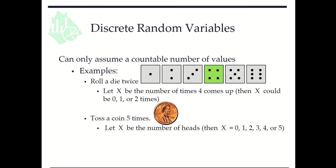For example, when we roll a die twice and let x be the number of times 4 comes up, then x could be 0, 1, or 2. Here x is a discrete random variable.